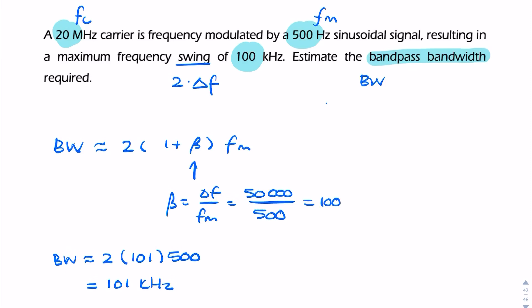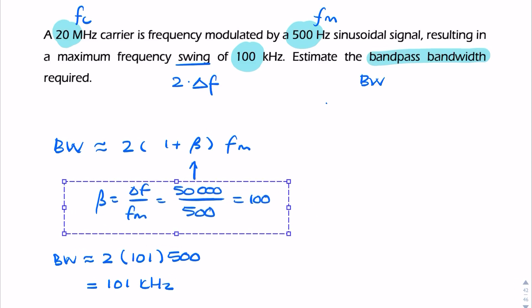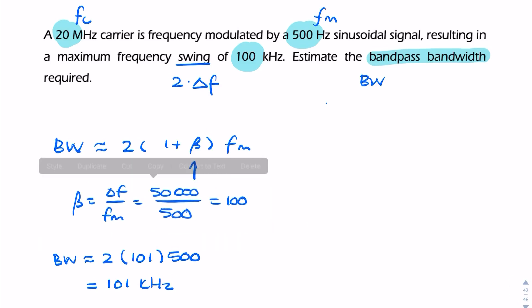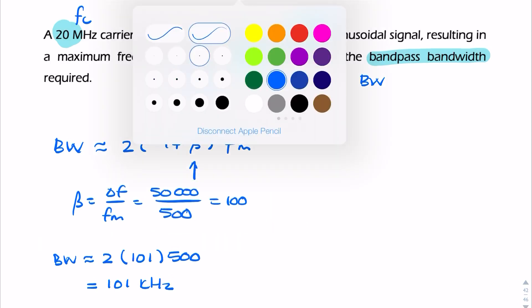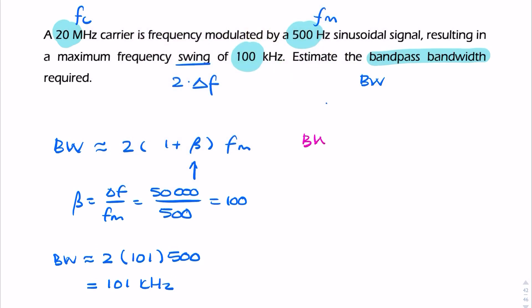Now, there is another way of looking at questions like this. Rather than finding beta, we could use an alternative expression for Carson's rule. Instead of saying 2(1 + β)fm, we could have replaced beta with delta f over fm.